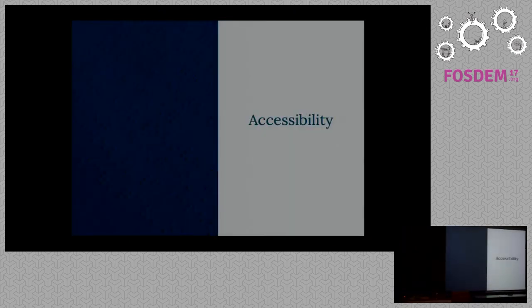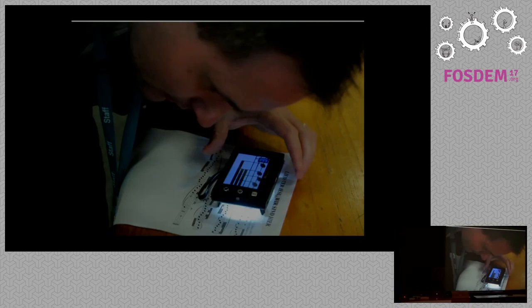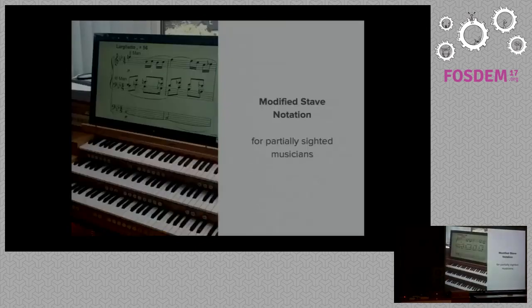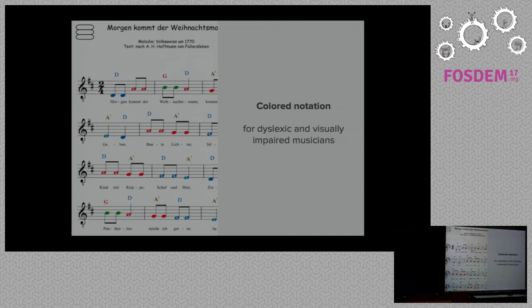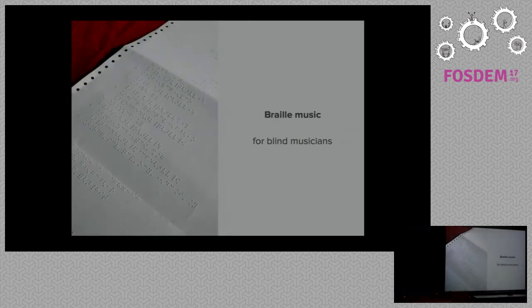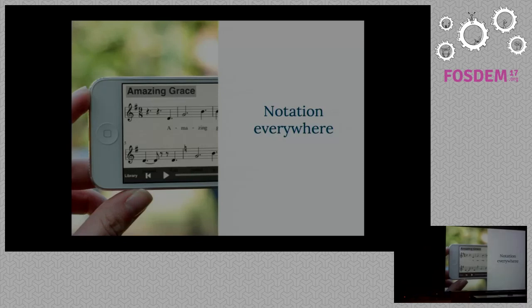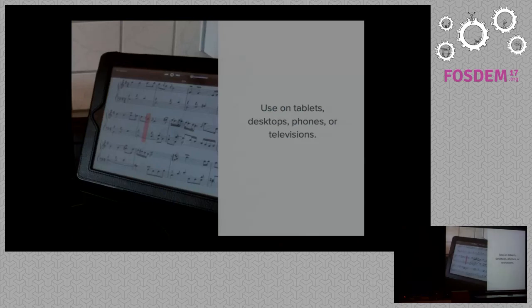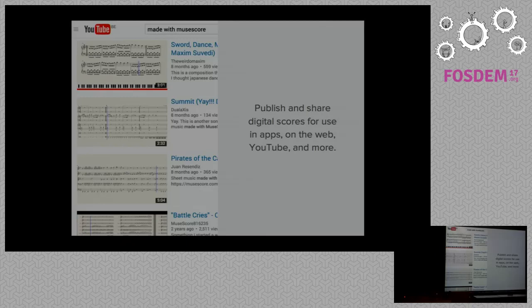The number one use case is accessibility. If somebody is partially sighted and they're trying to read sheet music, at the moment they have to use some kind of magnification technique — but we can do better than that. Once you have the semantic score, you're able to enlarge it, change the fonts, and make something called modified stave notation. You can also color different notes for people with reading disabilities like dyslexia, and we can even output braille for blind musicians. And of course, once you have the digital file, you're able to enjoy the music on a range of different devices and publish it on various different platforms.